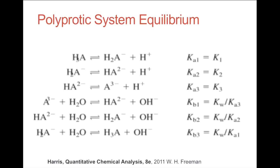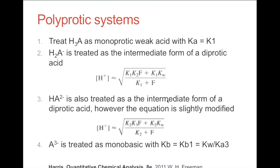These are the equilibrium expressions for a polyprotic system, which also show how to obtain KB1, KB2, and KB3 from given Ka values. For polyprotic systems: H₃A is treated as a monoprotic weak acid with Ka = K₁; H₂A⁻ and HA²⁻ are treated as intermediate forms using specific H⁺ equations; and A³⁻ is treated as monobasic with KB = KB1, where KB1 = Kw / Ka3.